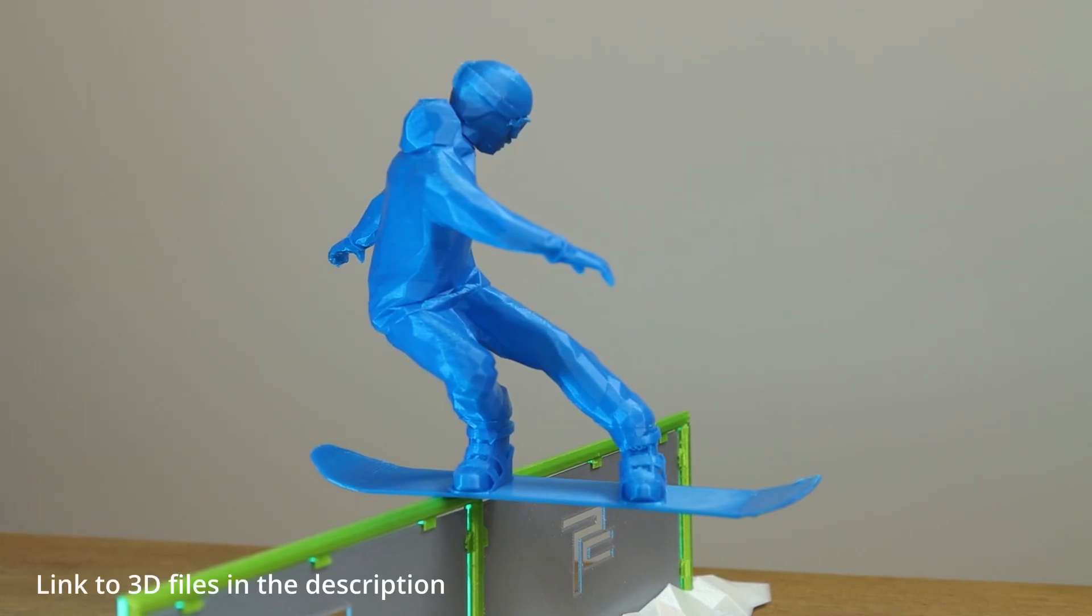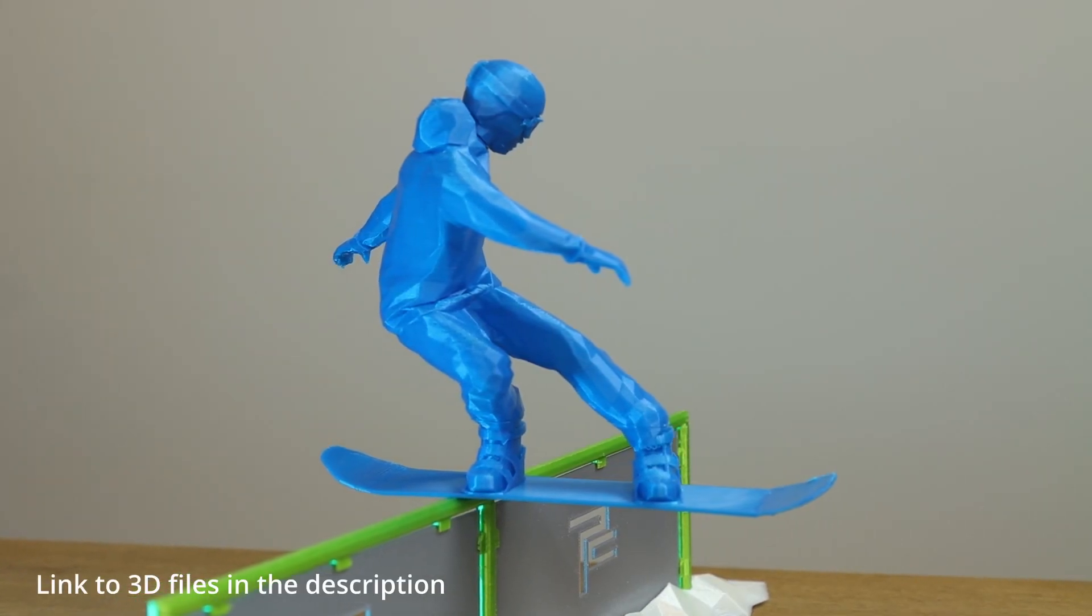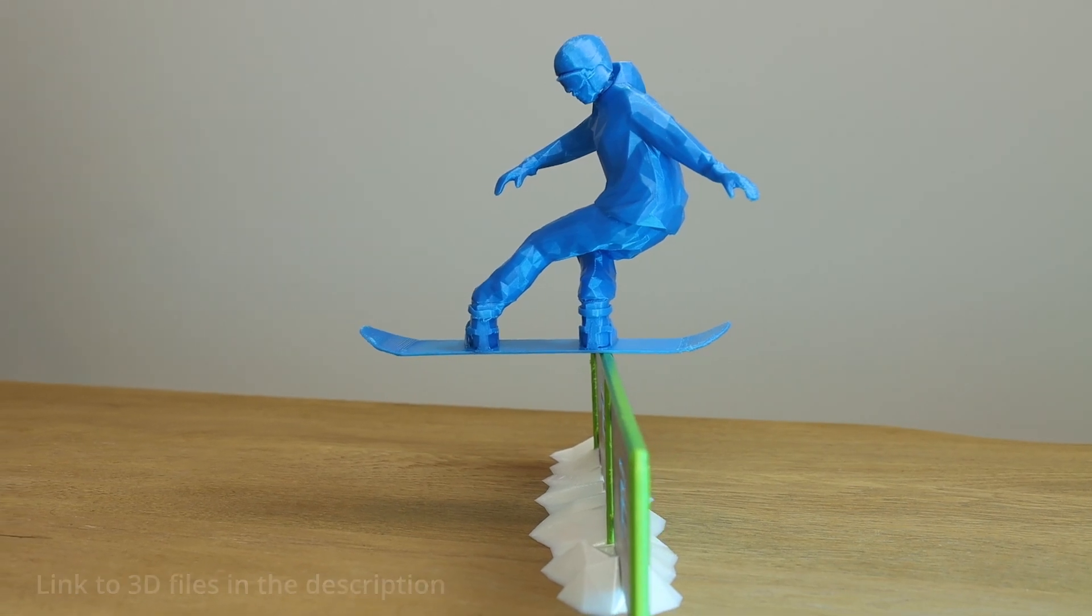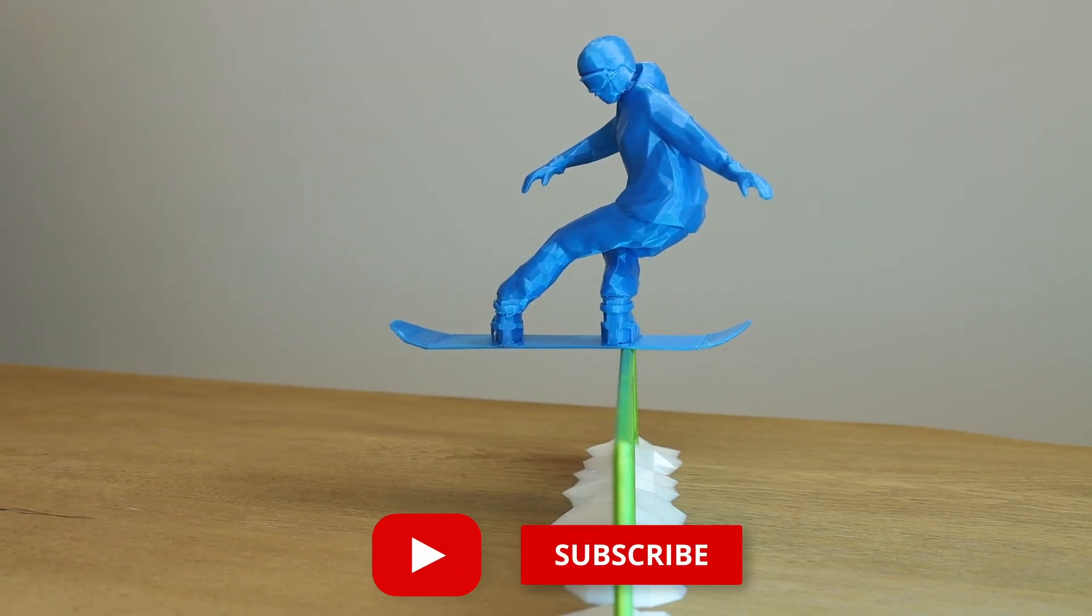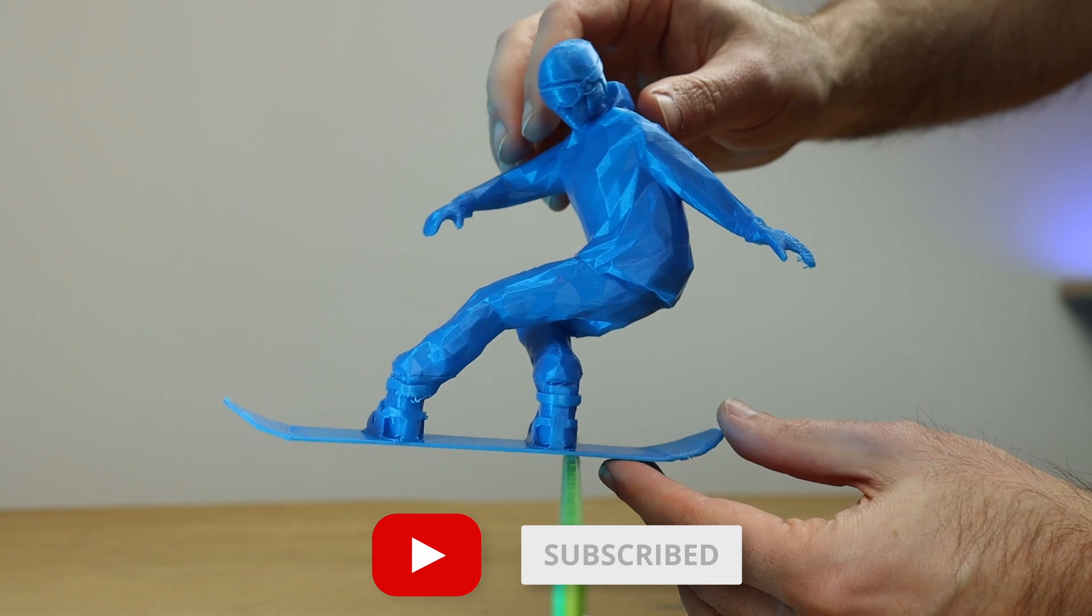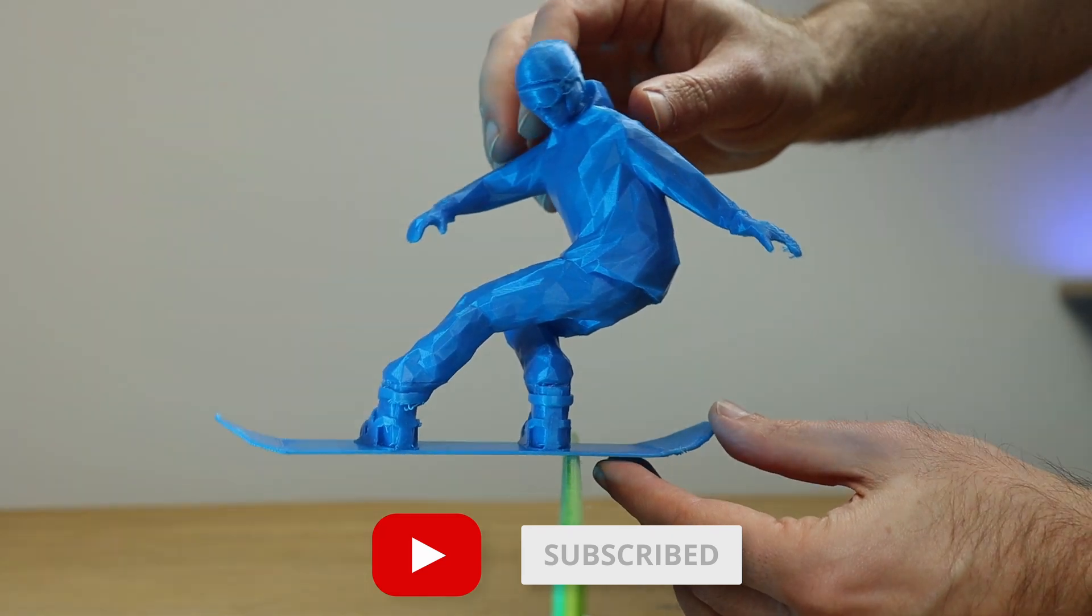We are going to make a snowboarder in the middle of a front side blunt slide. But to accomplish what you see on screen I had to do more than just print the parts. This print has more going on than meets the eye. So let me show you what that is.